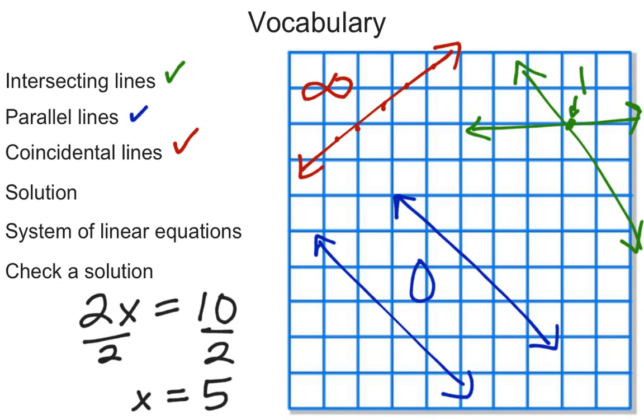There is one value in this case where I can go back and substitute that value in for x to make sure that it works. This is actually called checking the solution. So if I substitute the 5 in place of the x, then I have 2 times 5, which does equal 10, and that checks out. That is called checking the solution.